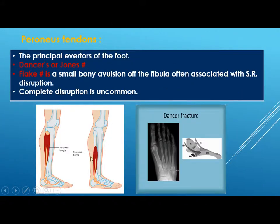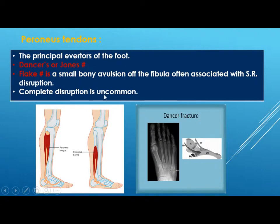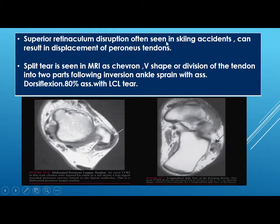The peroneal tendons are the principal evertors of the foot and lie posterior to the fibula. A dancer's or Jones fracture shows a bony fragment detached from the base of the fifth metatarsal. A small bony avulsion of the fibula is often associated with superior retinacular disruption. Complete disruption is uncommon. Superior retinacular disruption, often seen in skiing accidents, can result in displacement of peroneal tendons. A split tear is seen on MRI as a chevron or V-shape division of the tendon, following inversion ankle sprain with dorsiflexion, 80 percent associated with LCL tear.